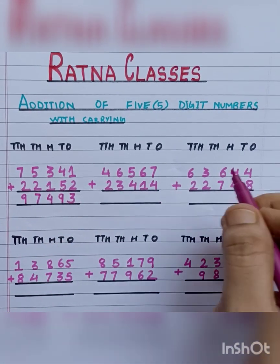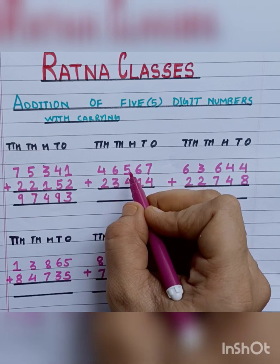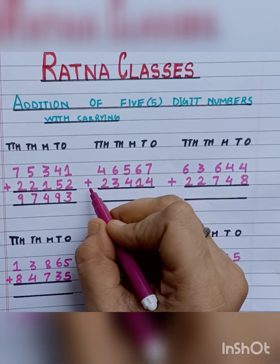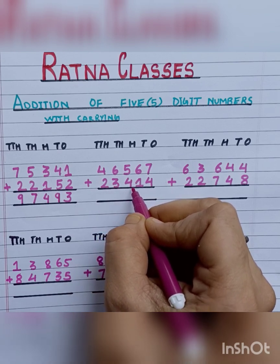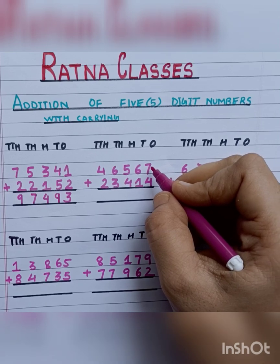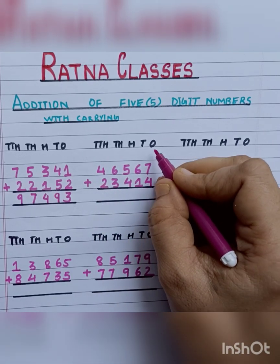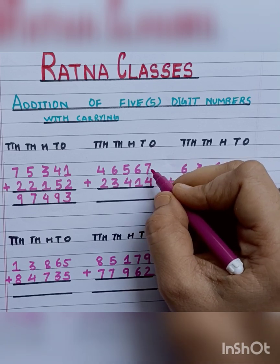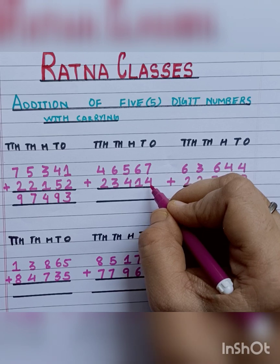Let's move to the next sum: 46,567 plus 23,414. First of all, we will add 7 plus 4, the digits on the ones place. 7 plus 4 is 11.